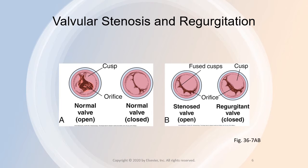The pressure on either side of an open valve is normally equal. However, in a stenotic valve, the valve opening is smaller, and the forward flow of blood is impaired. This creates a difference in pressure on the two sides of the open valve.